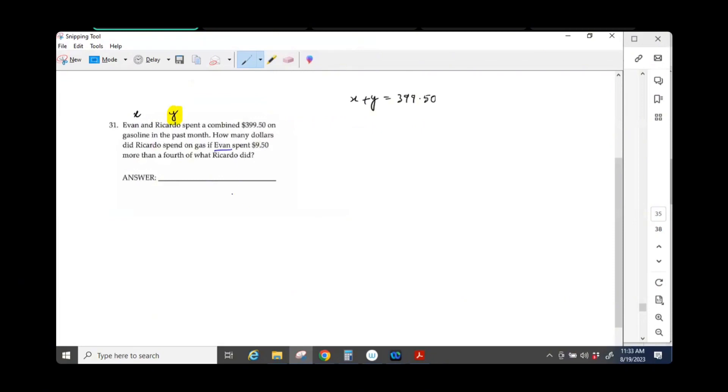Even, which is X, spent $9.50 more than a fourth of what Ricardo did. Is my equation making sense or not?